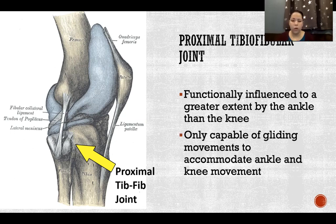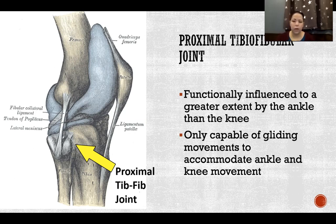This joint is only capable of gliding movements to accommodate ankle and knee movement. It is a synovial joint sharing a large synovial joint capsule with the other two joints of the knee, but it is a gliding joint — all it does is glide to accommodate the movement happening in the knee complex and in the ankle complex.